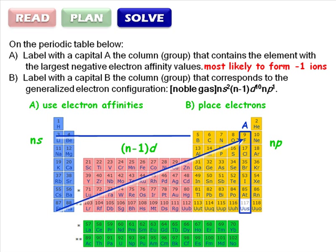And finally, one P electron places us in the column that starts with boron. Label this column with a capital B, and all that's left is to check your work.